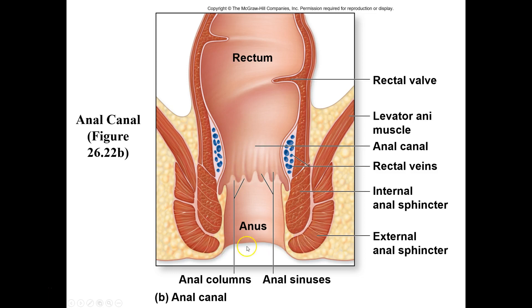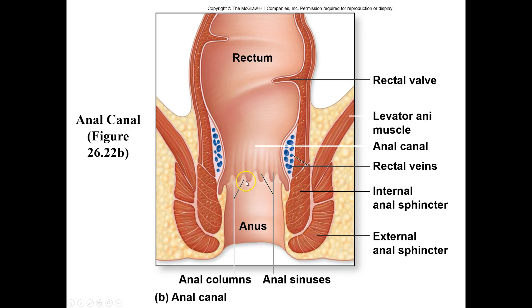We control the external sphincter voluntarily, but the internal smooth muscle sphincter is controlled by the autonomic nervous system. When that sphincter opens, that's when we feel a very strong push to defecate.